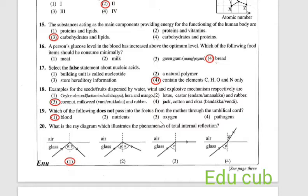Seventeenth one: select the false statement about nucleic acids. First one, building unit is called nucleotide, it is correct. Second one, a natural polymer, it is correct. Third one, stores heredity information, it is very correct. Fourth one, contains the elements C, H, O and N only. It is the wrong one. Fourth answer is the false statement about nucleic acids.